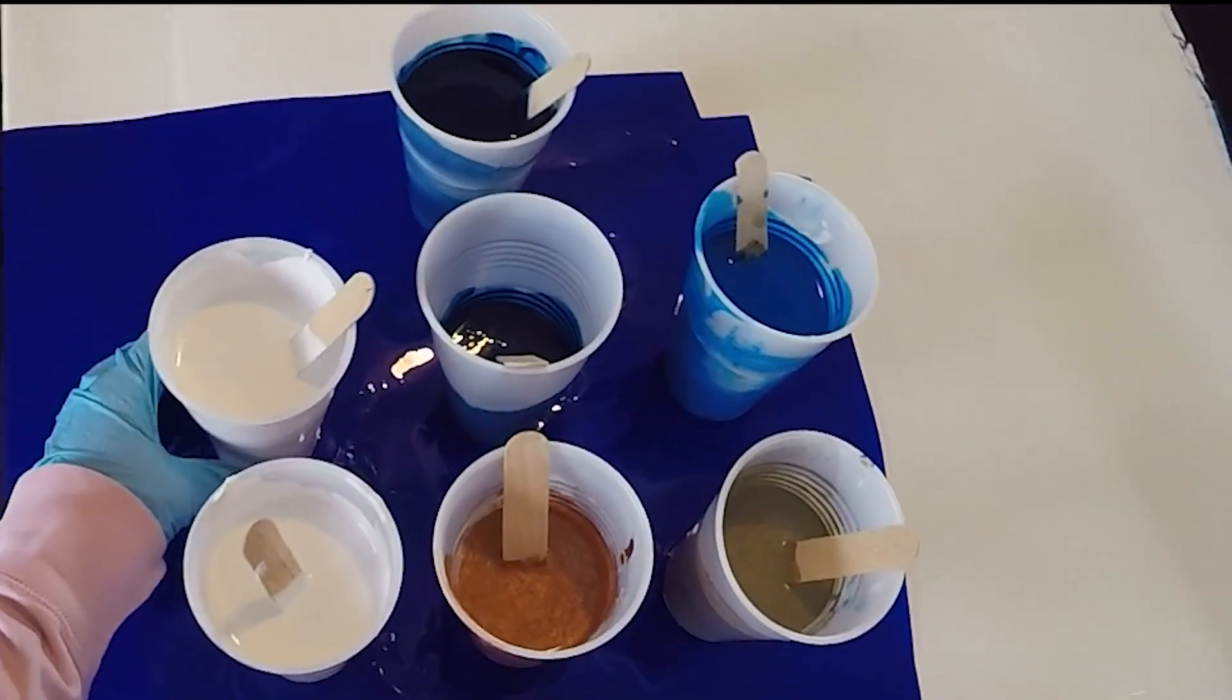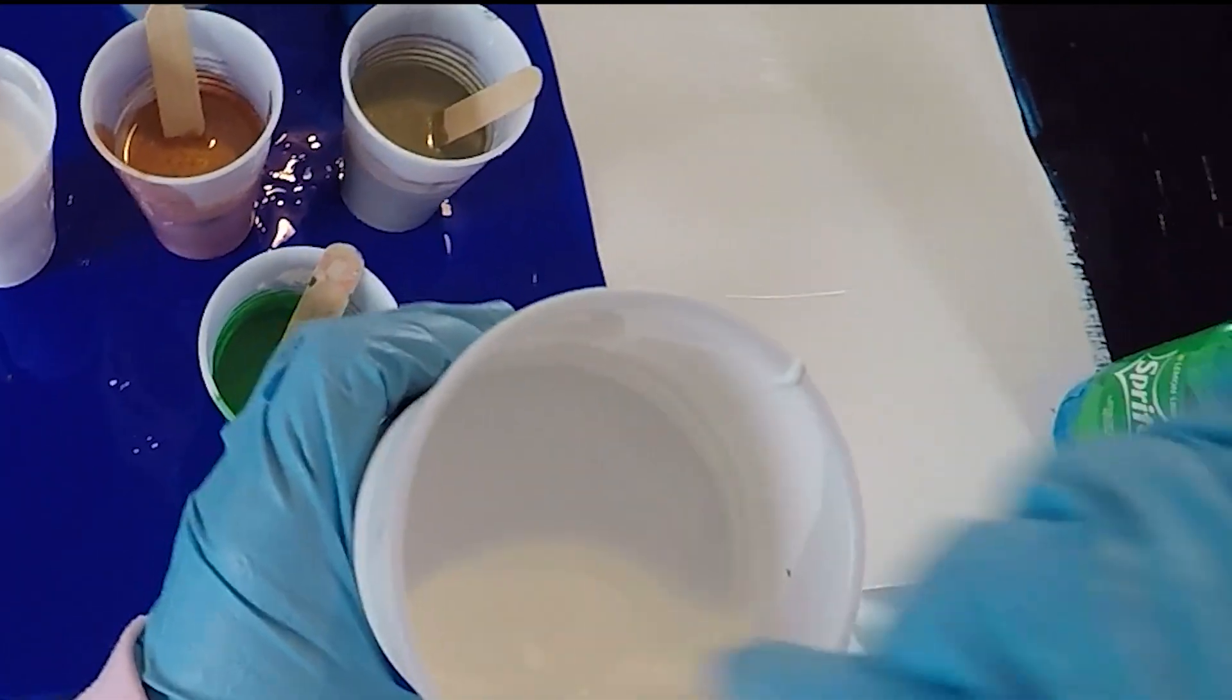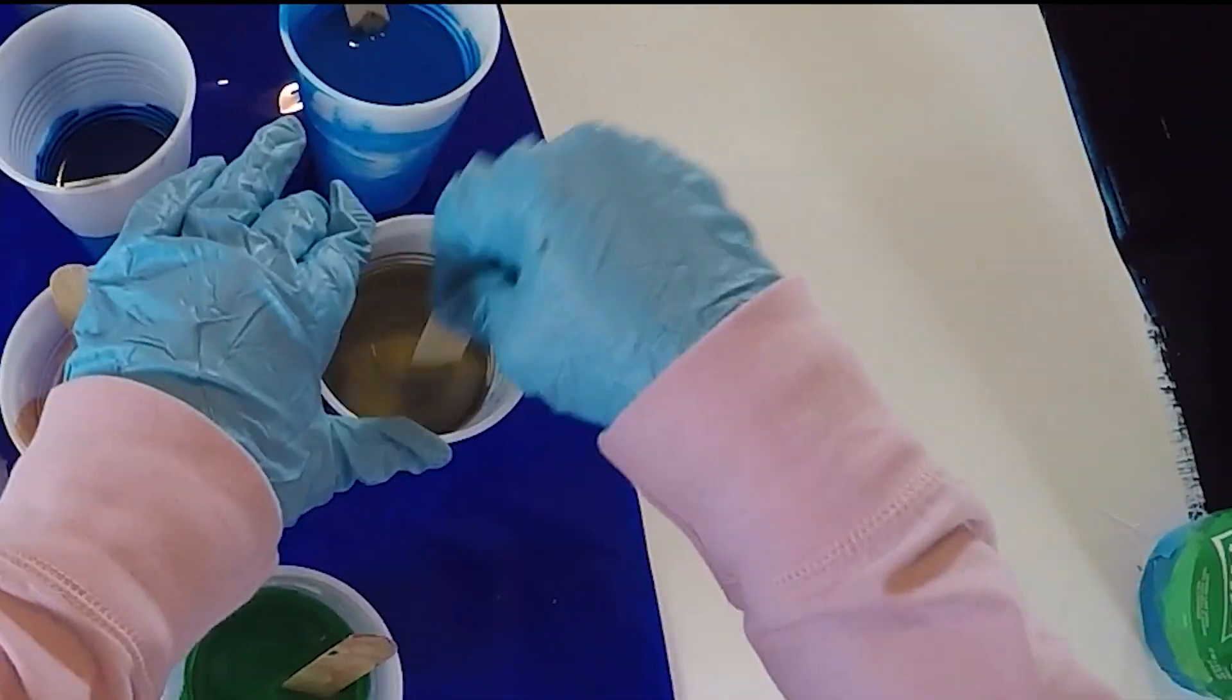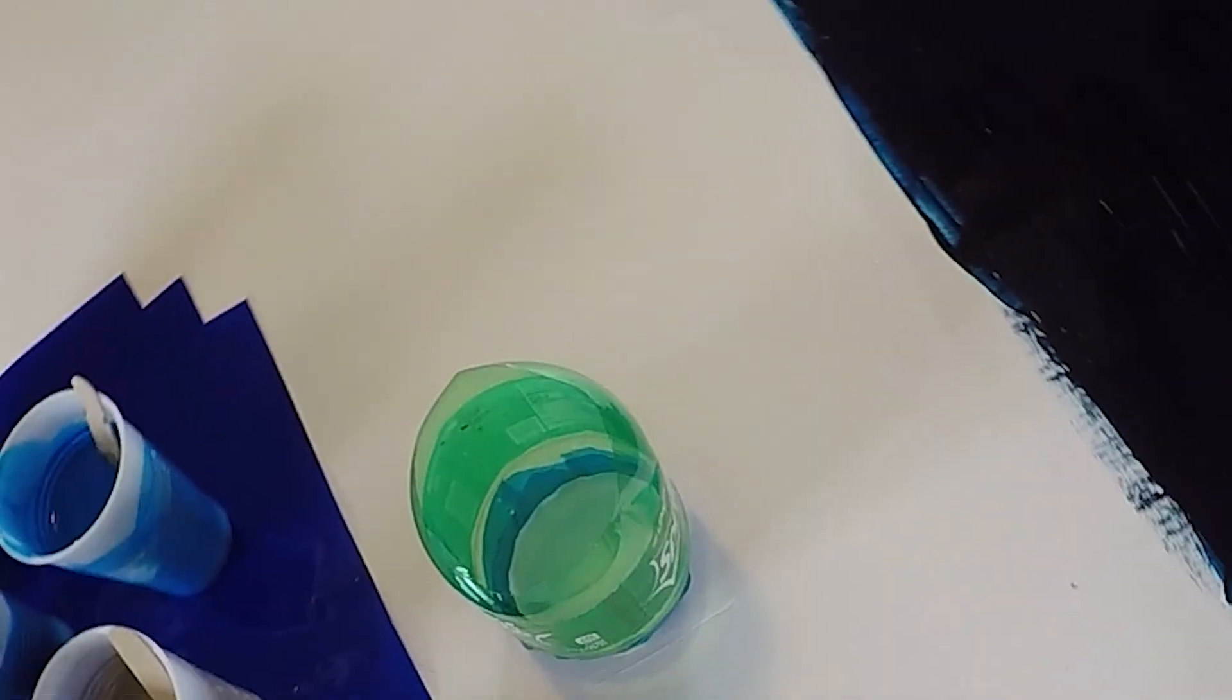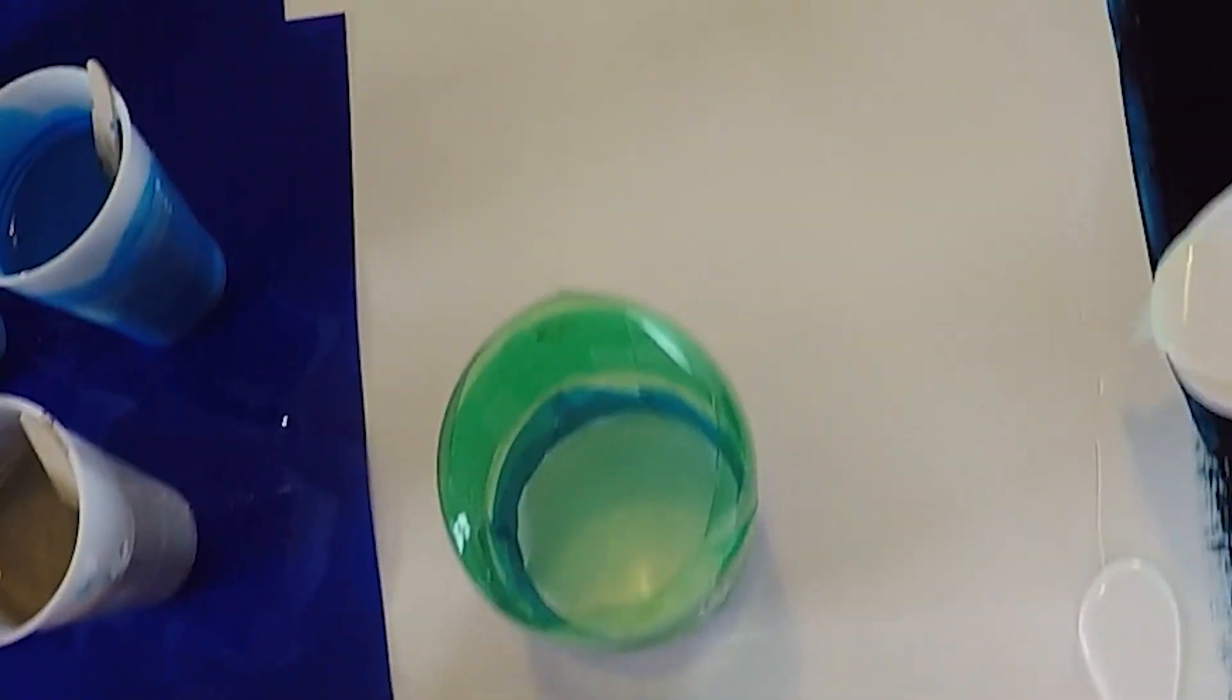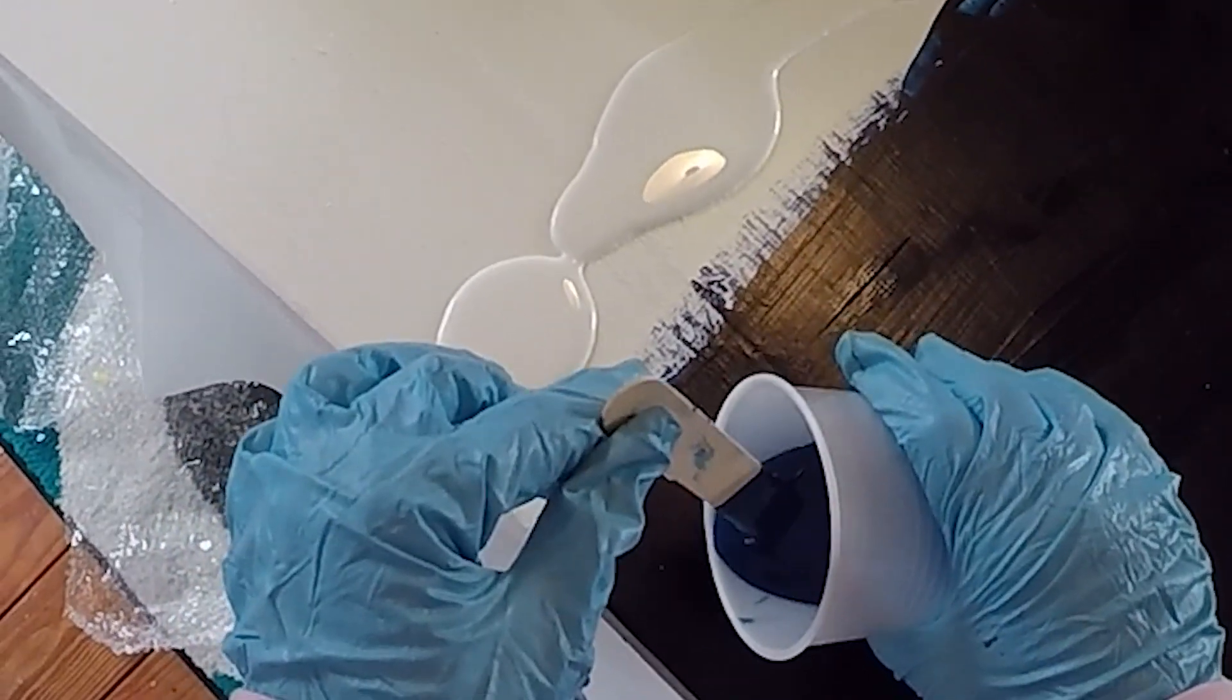And before you start, you know, just mix them all. See, this one's got some air bubbles in it. Let me just mix it a little bit up. So first, what I want to do, I'm just going to pour a straight line going across, just to help this flow better. I'll put the white here, just a line.